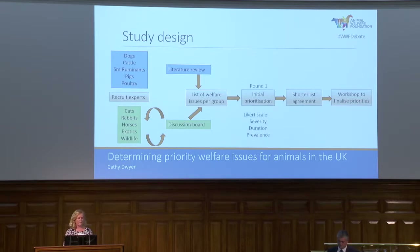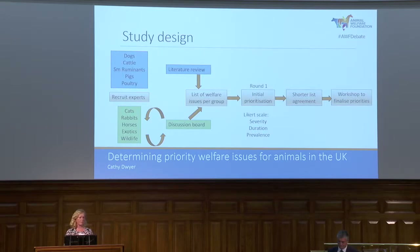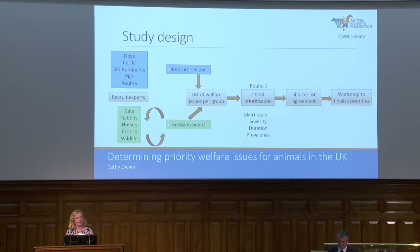In round one, again anonymously, experts were asked to rate the severity, duration, and prevalence — in their opinion — of each welfare issue on a six-point Likert scale. We then took that information, looked at individual rankings and the median overall rankings, and produced a list of everything that scored as at least somewhat important to the expert group on average.